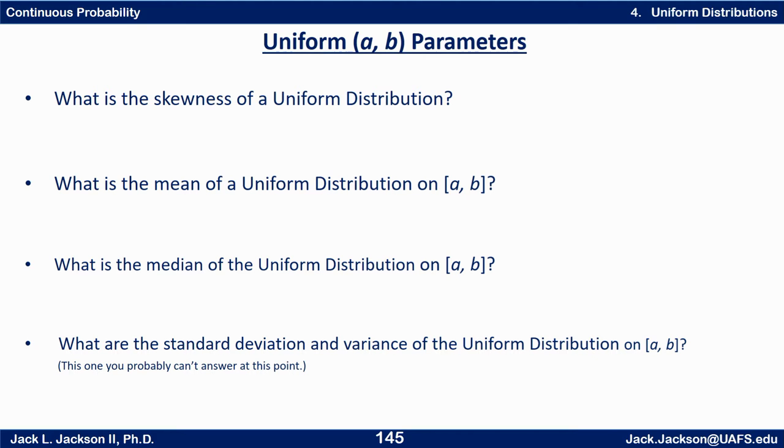Now you should be able to answer three of these four questions right now. What is the skewness of a uniform distribution? What is the mean of the uniform distribution on A to B? What's the median of the uniform distribution on A to B? And then the one that you probably can't answer exactly but should have some clue about is what are the standard deviation and variance of a uniform distribution on A to B?